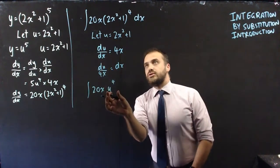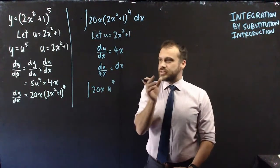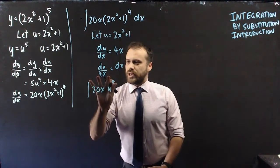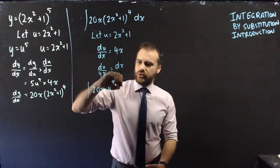So 20x, u^4. And then this with respect to x, we can replace it with du over 4x.